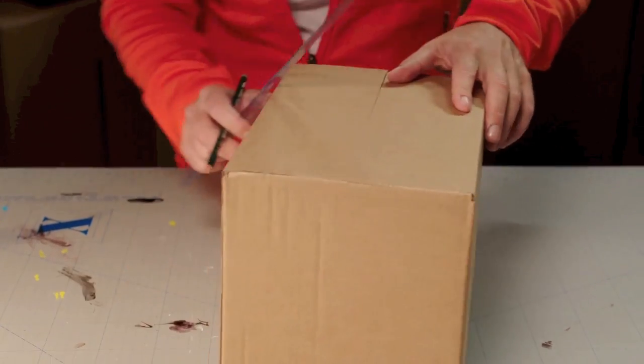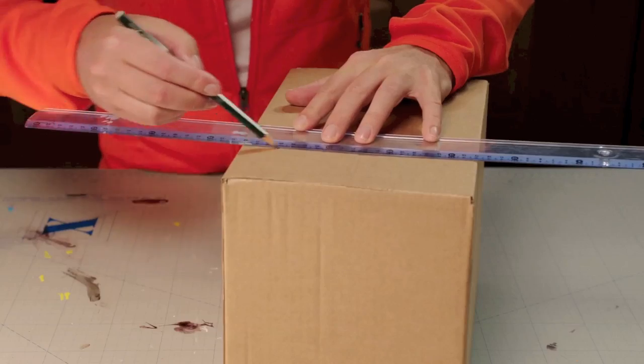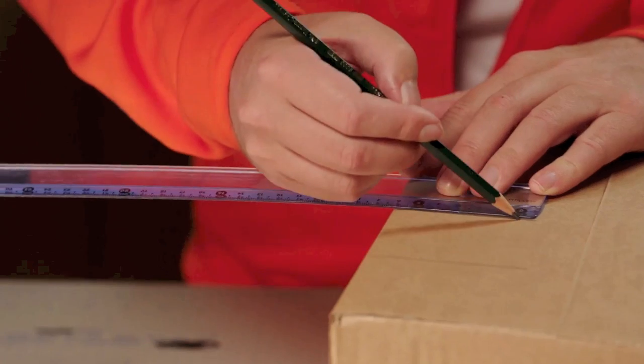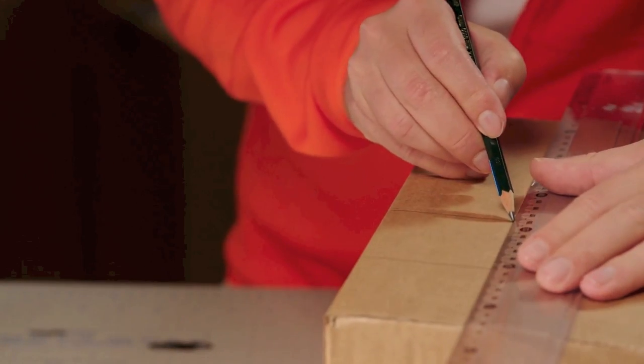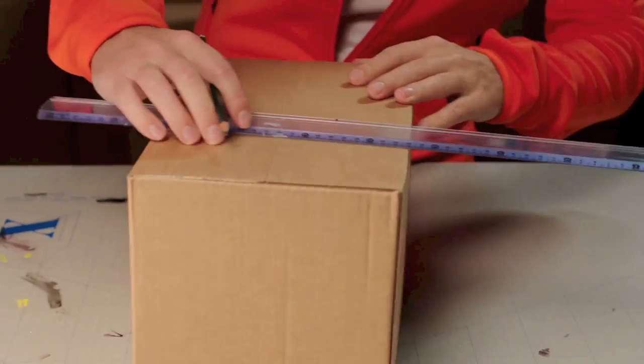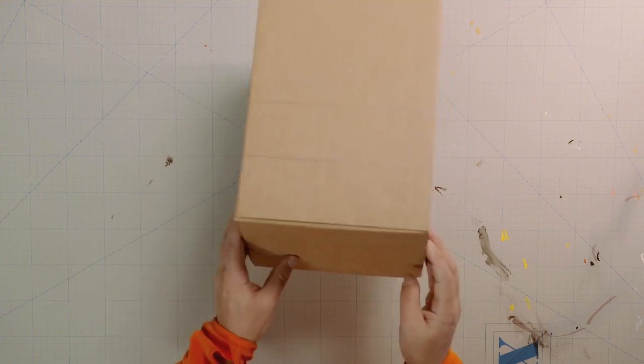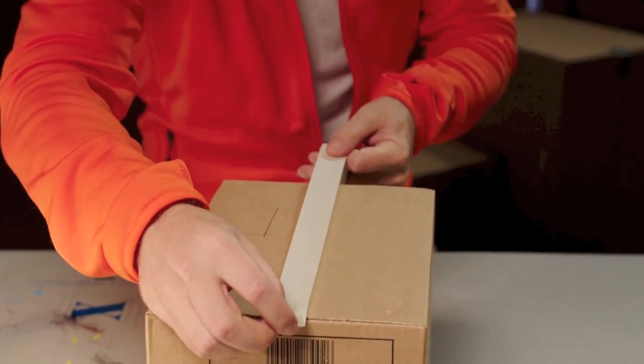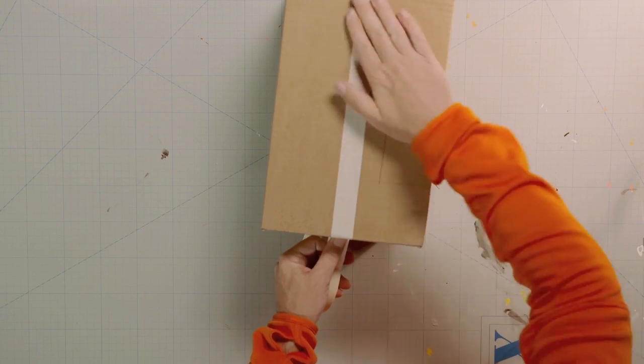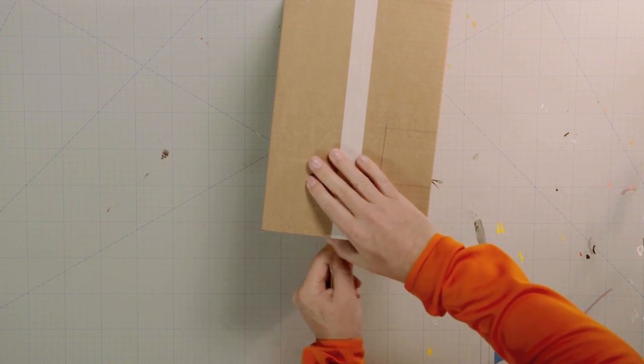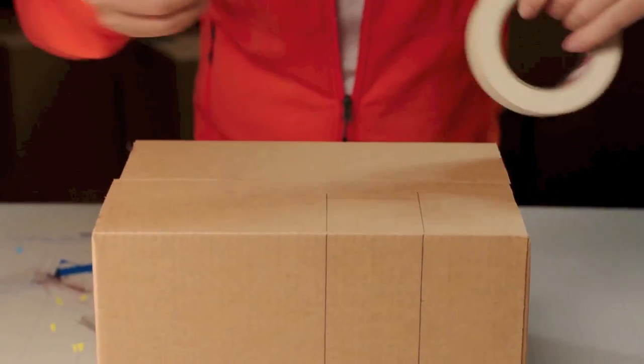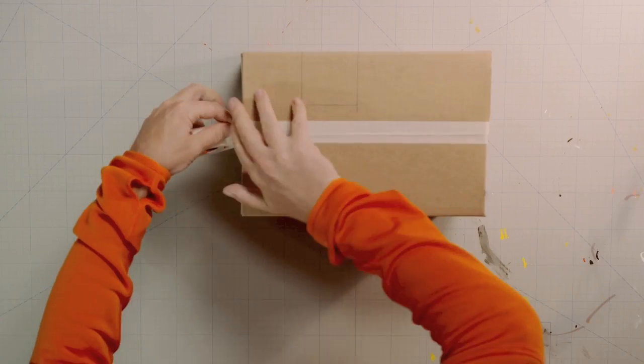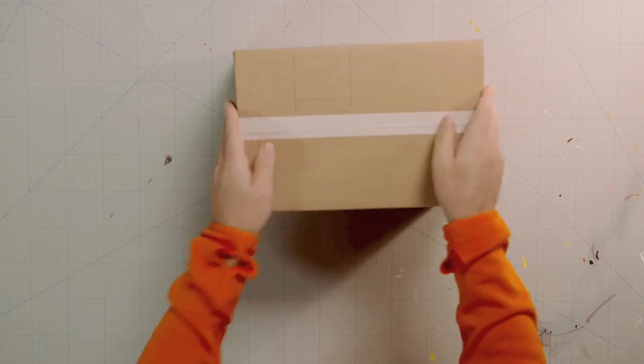Continue these lines around the sides of the box. This is how they should look when finished. Now, put some sticky tape over the flaps.